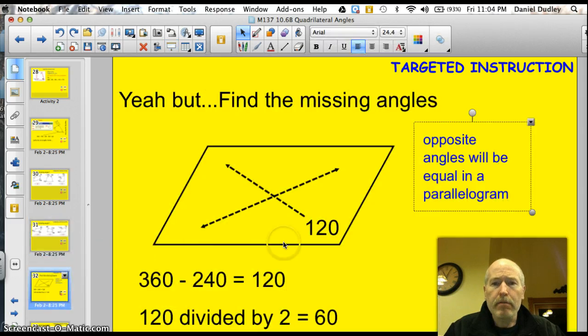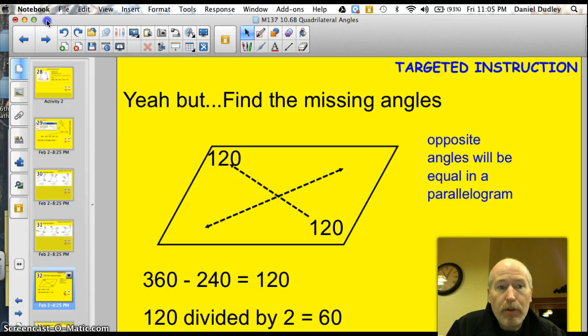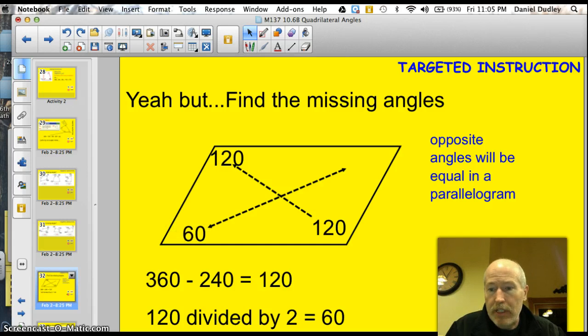There's always a yeah, but, right? Yeah, but find the missing angles here. I've given you one angle. Yeah, but, opposite angles will be equal in a parallelogram. Therefore, if this guy here is 120 degrees, this guy here has to be 120 degrees. Right? And if these two angles are equal, I can just take 360 degrees. Let me get my calculator. I can take 360 degrees, and I'll subtract what I have, which is 240. That's 120 plus 120. Subtract that 240. And I got 120 degrees left. And if I divide that, if these two angles are going to be equal, if I divide that by 2, that equals 60. So I can grab these guys and throw them in. 60 degrees here, and 60 degrees here. And let's see if it checks out. 120 plus 60 is 180 degrees. And here's another 180 degrees.